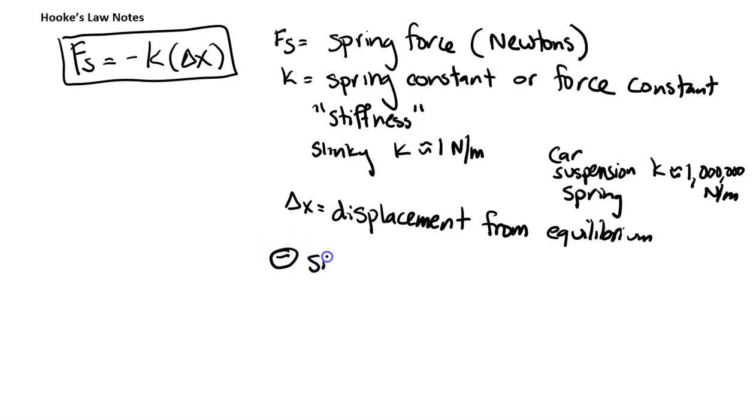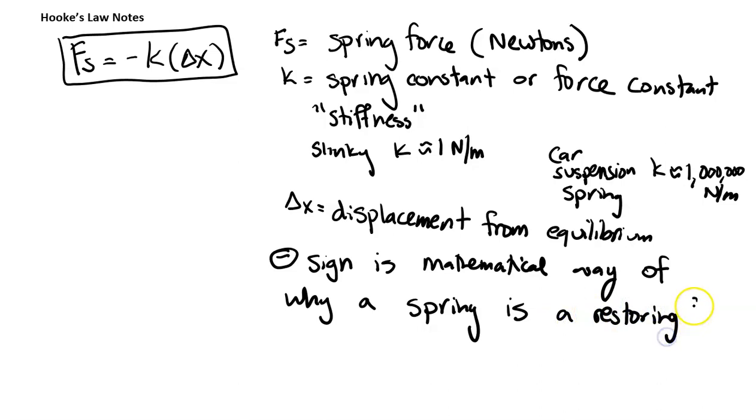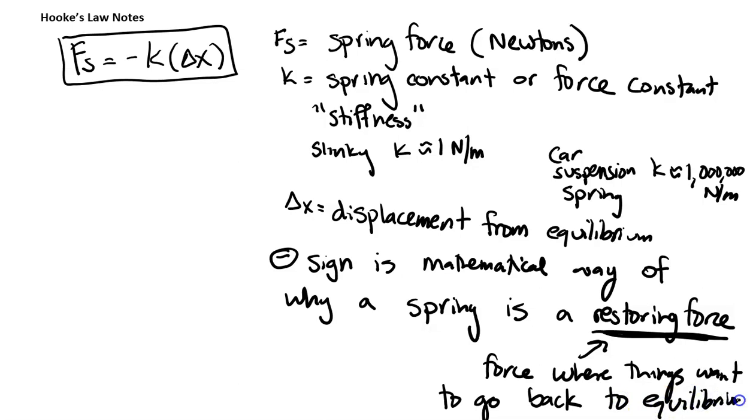The negative sign is just a mathematical way to say that the spring is a restoring force. This is a mathematical way of explaining why a spring is a restoring force. And what I mean by restoring force is that is any force where things want to go back to equilibrium.